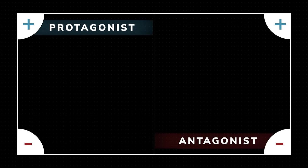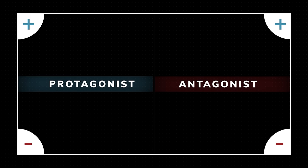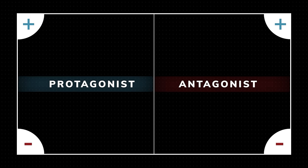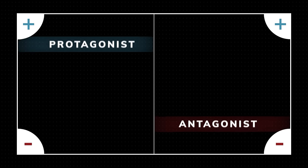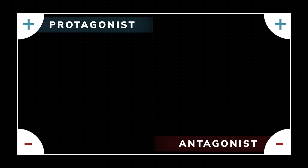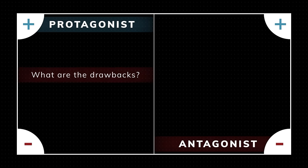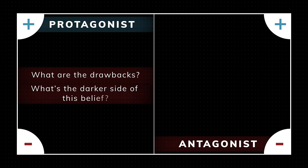Now most writers stop here, but this is where it can become interesting. To fill in the last two points, ask these questions. Under viewpoint one, the con: what are the drawbacks of your protagonist's belief? What's another darker version of this belief that your protagonist hasn't realized?